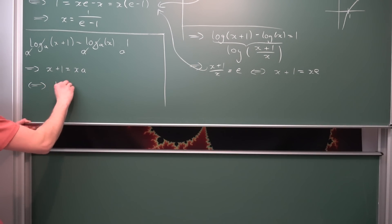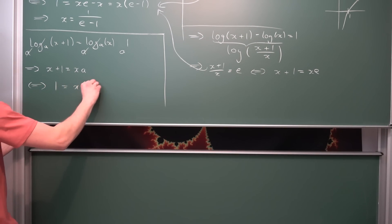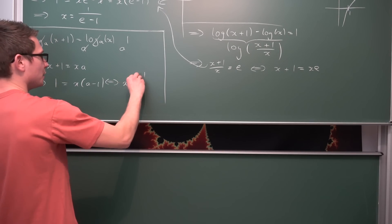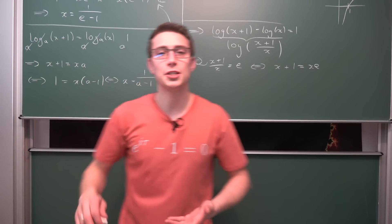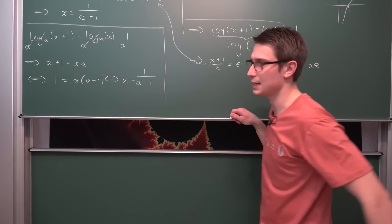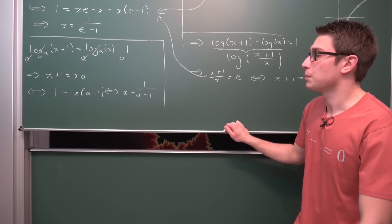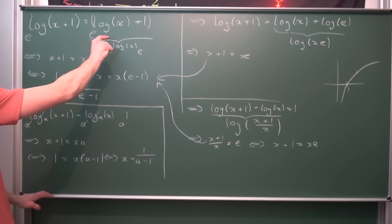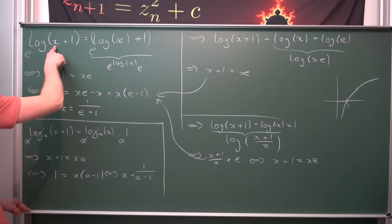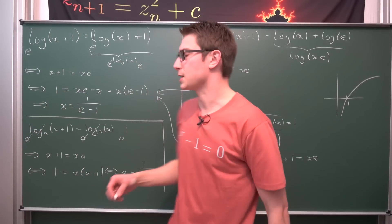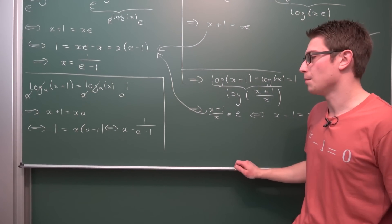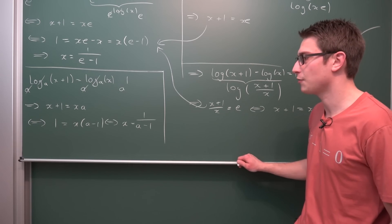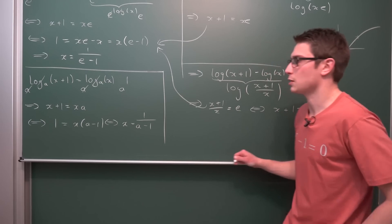We basically know how to solve this equation — same procedure as before. We have 1 is equal to x times a minus 1, wait — x times (a minus 1). Dividing both sides by a minus 1 gives us x is equal to 1 divided by a minus 1. We just have one condition that must be satisfied: a is not equal to 1, because then we would divide by 0. Log to base 1 does not work out because we would divide by 0 — so that is not defined. But this right here is the first generalization.